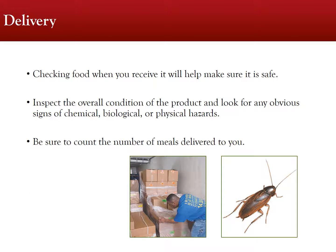We will now go through the proper food safety procedures for a meal service, from delivery to clean-up after a meal distribution. Checking food when you receive it will help make sure that it is safe. When food is delivered, inspect the overall condition of the product and look for any obvious signs of chemical, biological, or physical hazards. Also, upon delivery, be sure to count the number of meals to ensure that you have the correct amount.